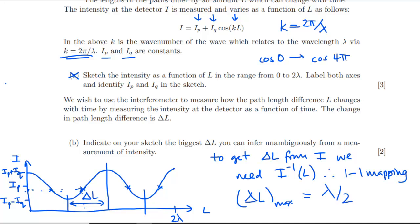So that's the biggest ΔL, which is λ over 2. So ΔL max is going to be half of one of our wavelengths. That doesn't come up very often. I don't recall seeing in a PAT paper so far anything on restricting domain in order to get an inverse function. So yeah, that's an interesting addition. And on that note, I'm going to leave this video here. That's another little batch. Come back in the next video with the remainder of the paper.